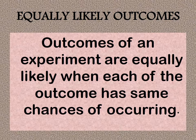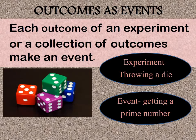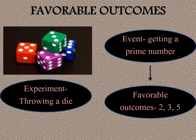Outcomes of an experiment are equally likely when each outcome has the same chance of occurrence. Now, each outcome of an experiment or a collection of outcomes makes an event. Taking the example of throwing a die as the random experiment, we consider the event of getting a prime number — so getting a prime number becomes the event here.